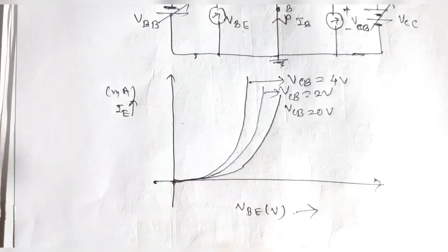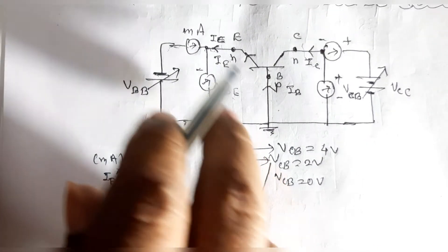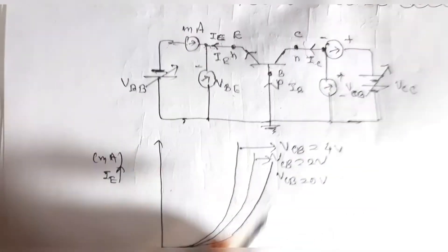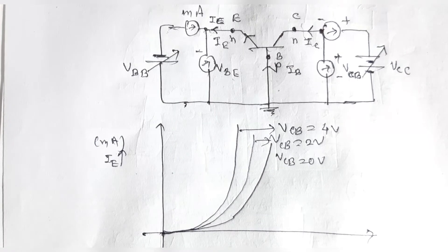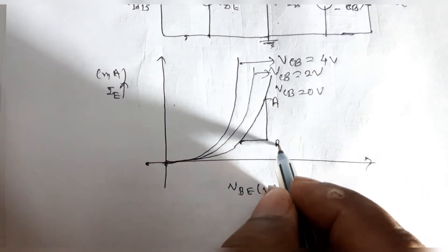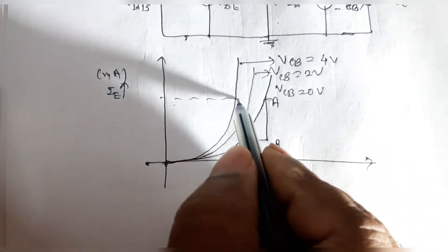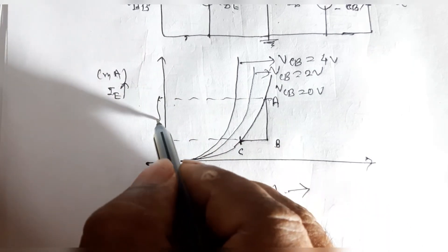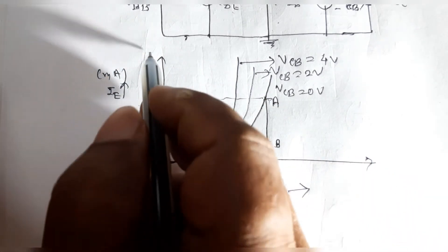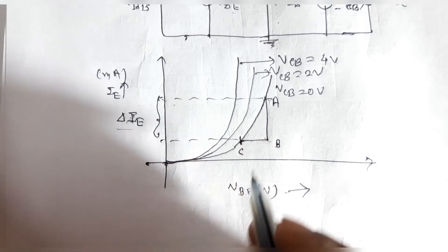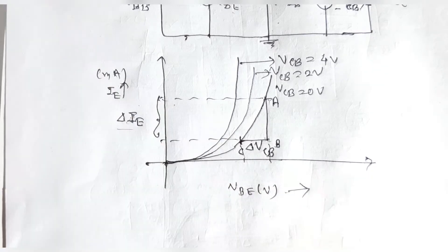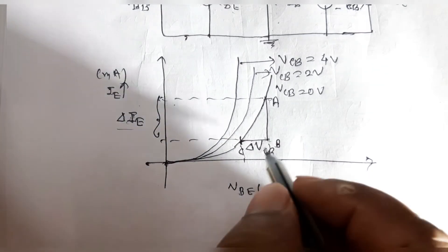From the input characteristics, you can calculate the input resistance. Since the base-emitter junction is forward biased, it offers low resistance. By taking the slope of any one curve — calling points A, B, and C — delta IE is the change along the Y-axis (AB) and delta VBE is the change along the X-axis (BC). Input resistance equals delta VBE divided by delta IE, at constant VCB.